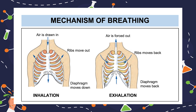During exhalation, ribs move down and inwards while the diaphragm moves up to its former position. This reduces the size of the chest cavity and air is pushed out of the lungs due to the pressure difference — volume decreases and pressure inside is more compared to outside. Therefore, air rich in carbon dioxide is exhaled. One breath includes one inhalation and one exhalation.